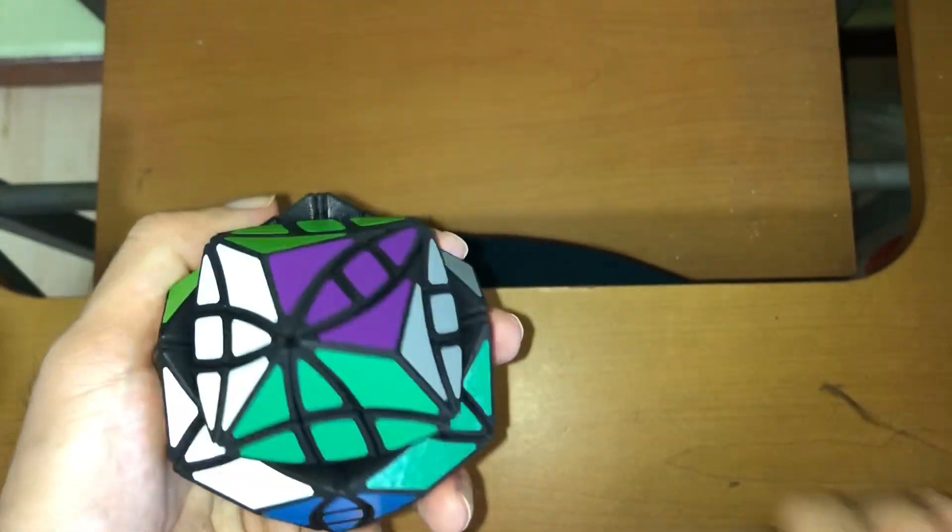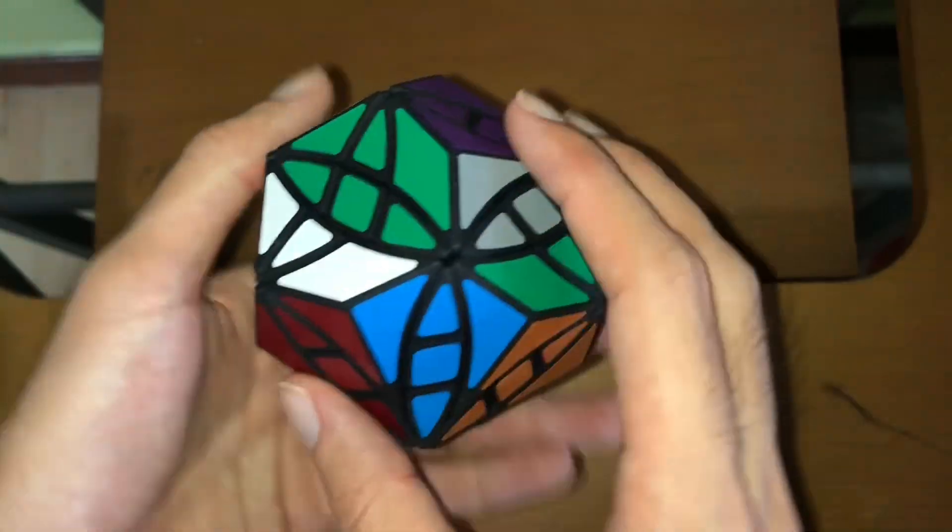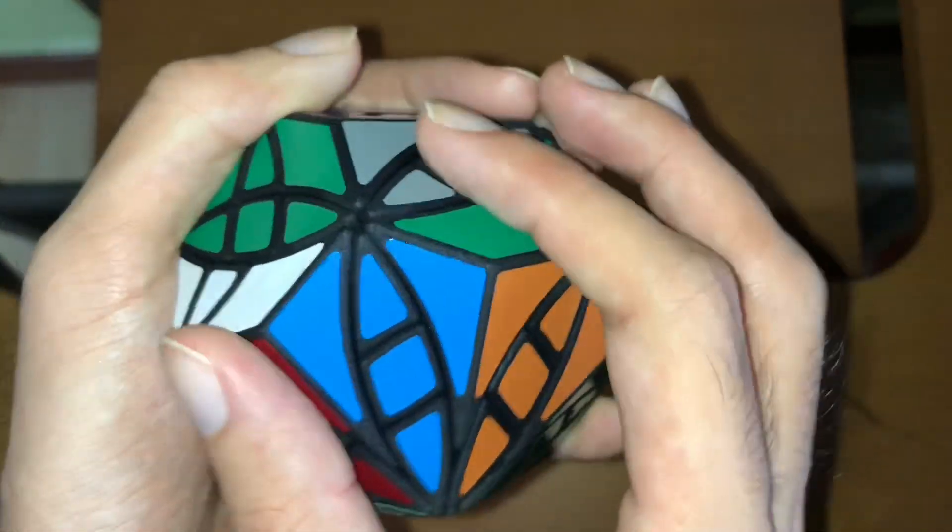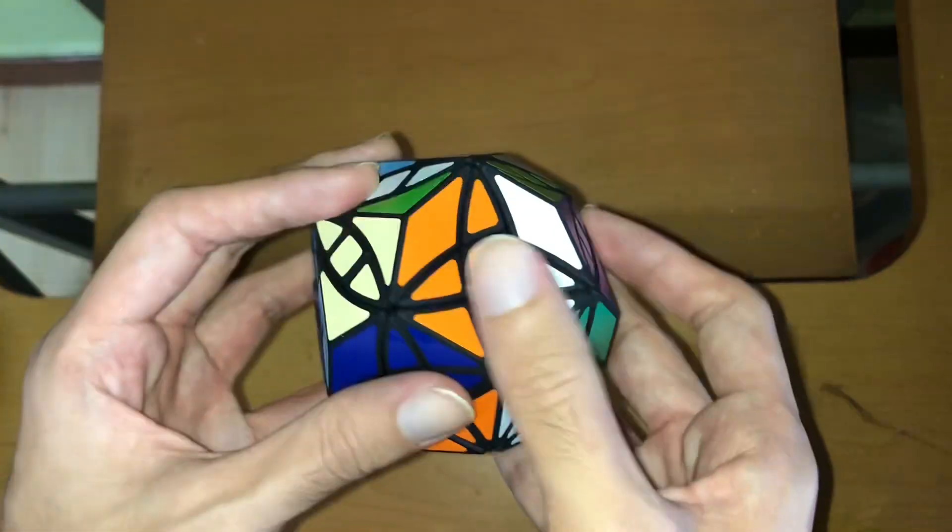Hence why it's Shallow Cut. So when I make a move on one of the 3x3 cubes, movement on the other cube is actually blocked because the cuts don't go all the way through. So you can only scramble one of the 3x3 cubes at a time.